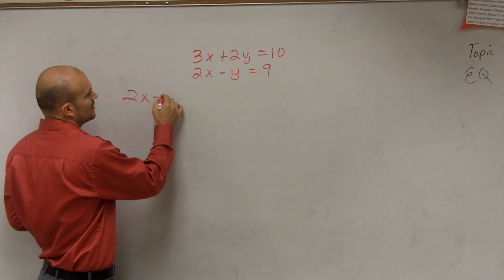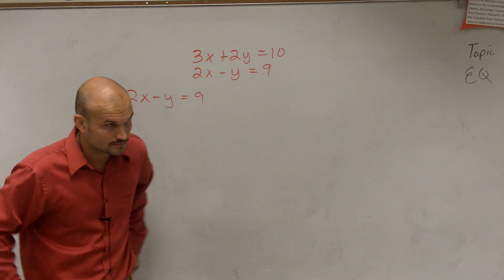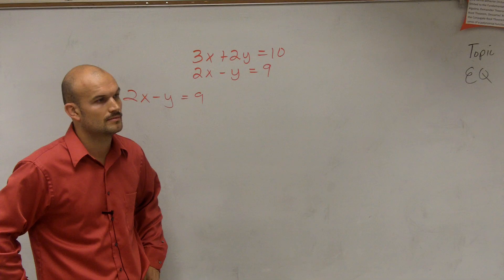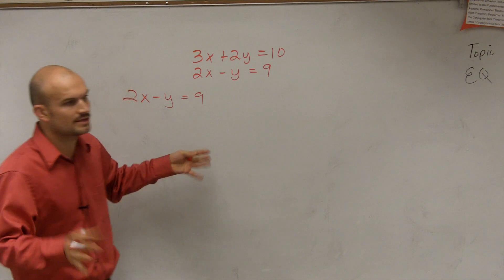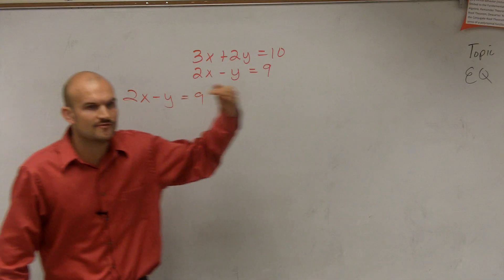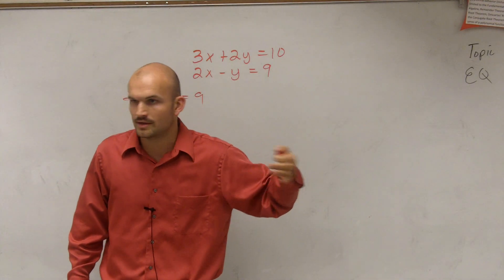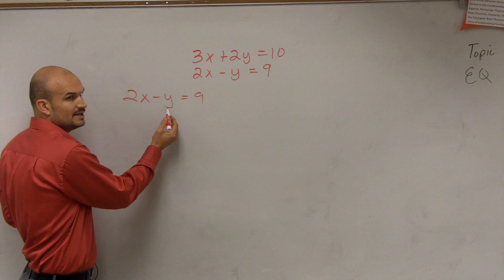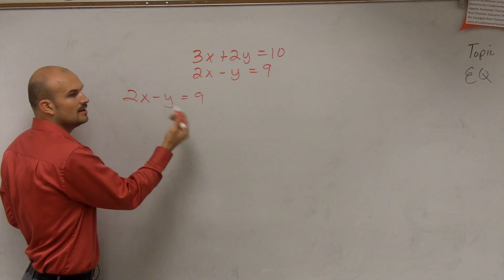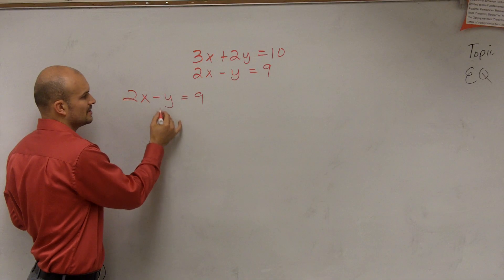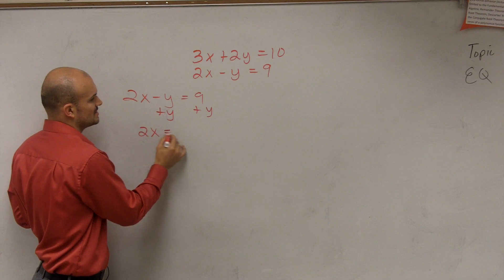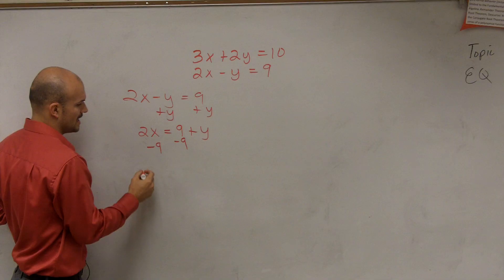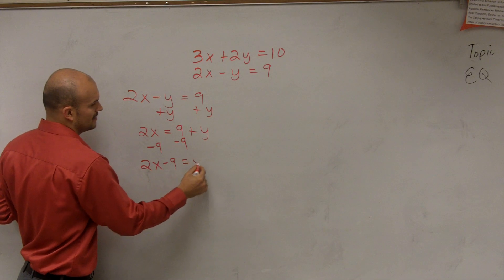So I'm going to choose this equation and solve for y because it has a coefficient of negative 1. You're choosing y because you always want to choose the variable with a coefficient of 1 or negative 1 — that's going to be the simplest way to solve these problems. To solve for y, we need to get y by itself, so I add y to the other side: 2x equals 9 plus y. Then subtract 9 from both sides: 2x minus 9 equals y.